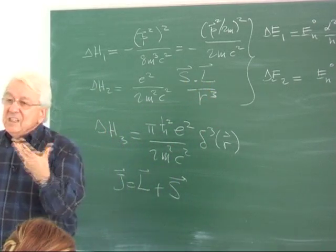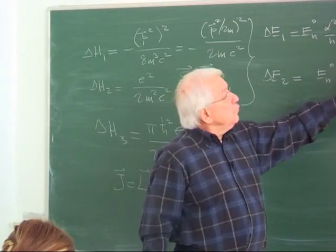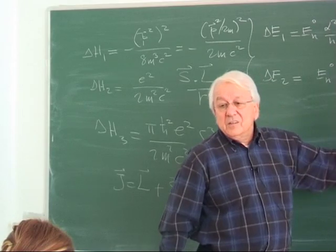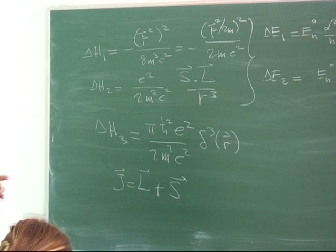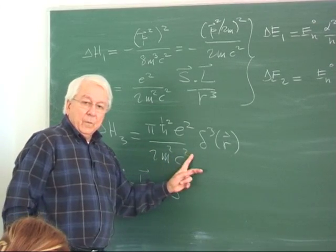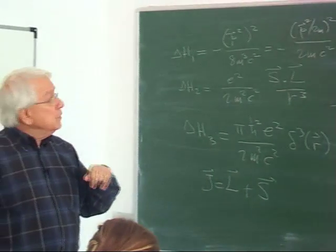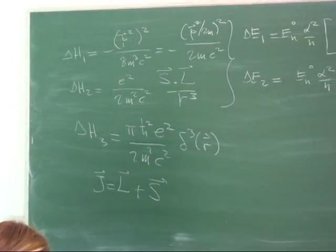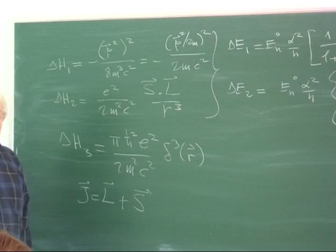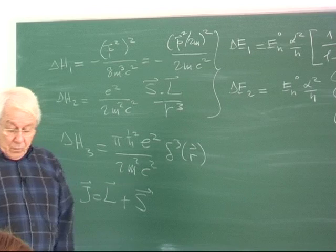What we have to do next is focus on the Darwin term and compute its contribution, then add up all three contributions to come up with a compact formula. Some of you have seen this result previously — it is a beautiful result that we can derive even at this level of quantum mechanics.